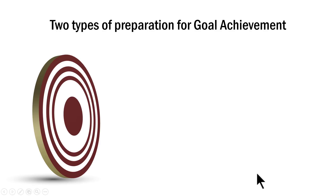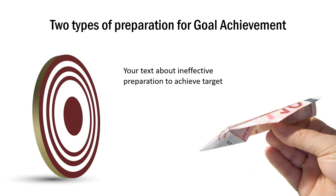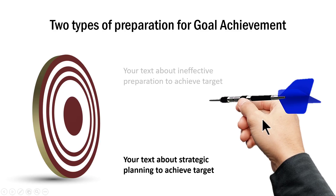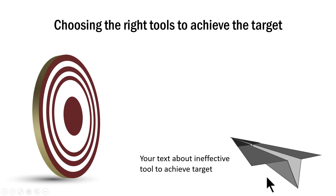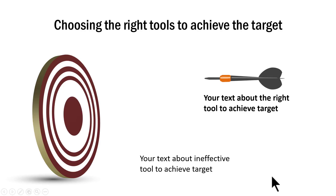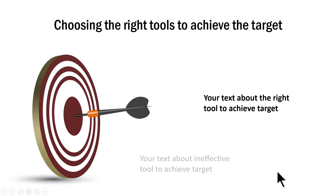Another template talks about two types of preparation for goal achievement — one is ineffective preparation where people throw money at the problem, and the other is better, more strategic planning to achieve the target. You can talk about both types of planning and then show how they work — the ineffective tool doesn't reach the target, while the right tool hits the bullseye. It's almost like communicating a story with visuals, and all of this is already animated and available as a template.